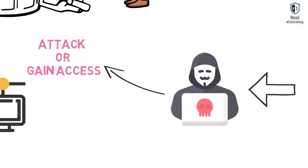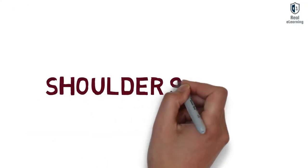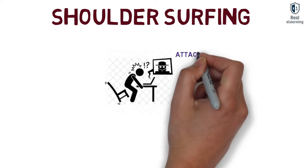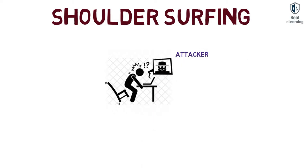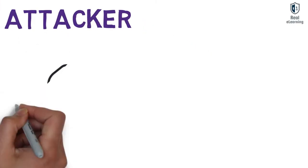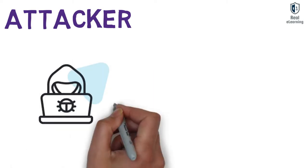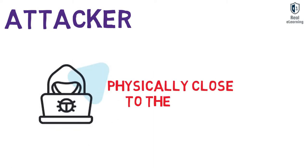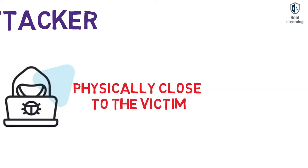A shoulder-surfing attack describes a situation where the attacker can physically view the device screen and keypad to obtain personal information. It is one of the few attack methods requiring the attacker to be physically close to the victim to succeed.